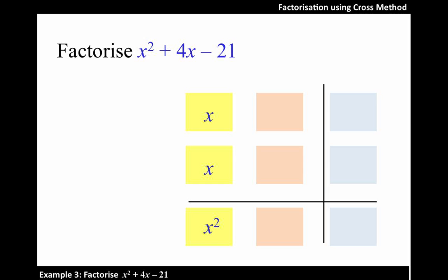Next, let's look at the constant term 21. The possible pairs of factors for 21 are 1 and 21, 3 and 7.